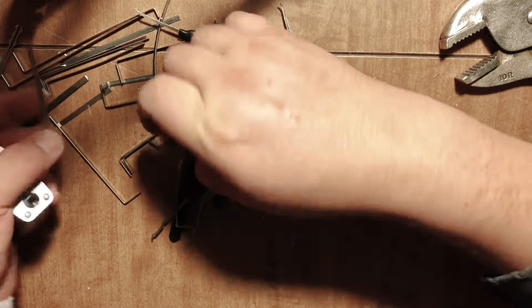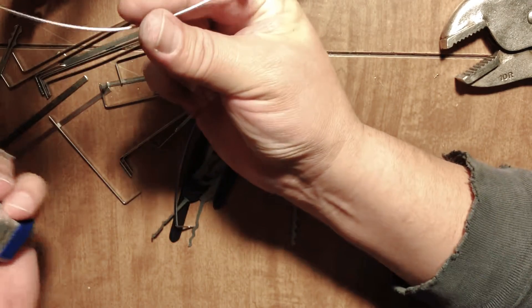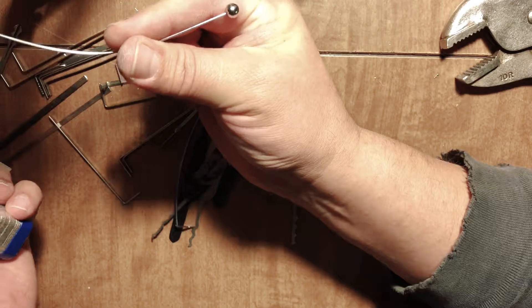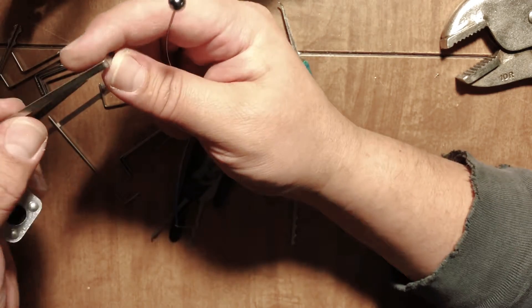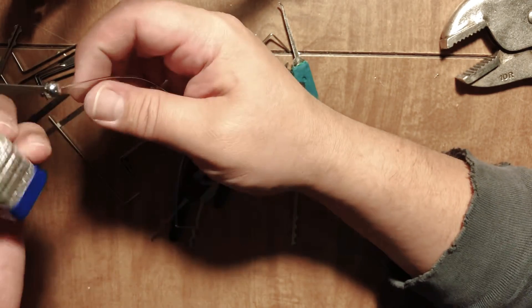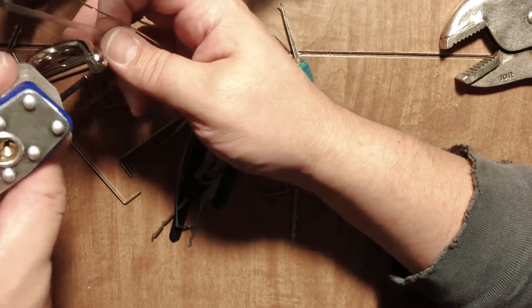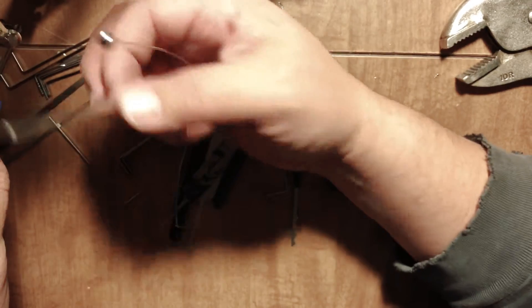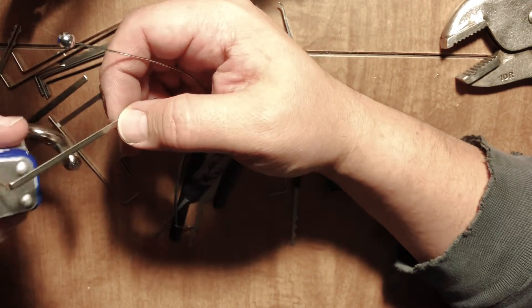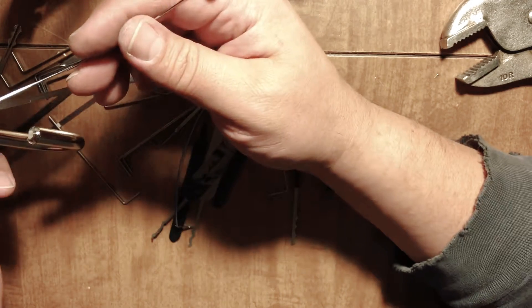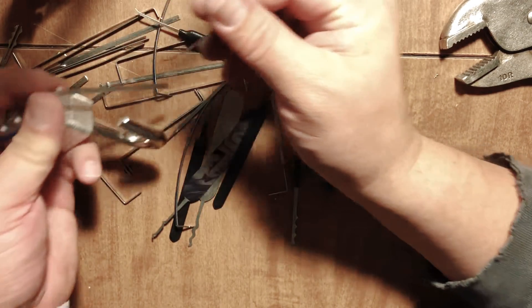Alright, so tension wrench and my piece of antenna. This is a standard big tension wrench. I mean, these wouldn't fit in a lot of locks, but alright. Master Lock Number Five. The trick to this particular one is a little bit of zipping with a spring steel wire.